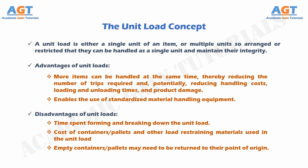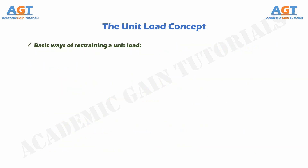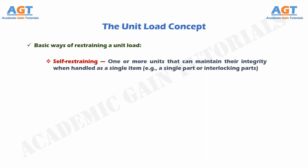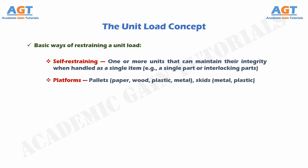Basic ways of restraining a unit load. Through self-restraining: one or more units that can maintain their integrity when handled as a single item — for example, a single part or interlocking parts. Through platforms: using pallets made of paper, wood, plastic, or metal; and skids made of metal or plastic.